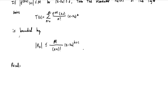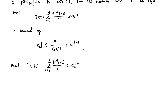Let's start by recalling that the k-th partial sum t sub k is a polynomial. This is given by the sum from n equals 0 up to k of the usual Taylor series formula — writing out the coefficients times x minus x naught to the power n. The series is truncated at some value k, becoming a finite polynomial, and the remainder is the tail of the series.